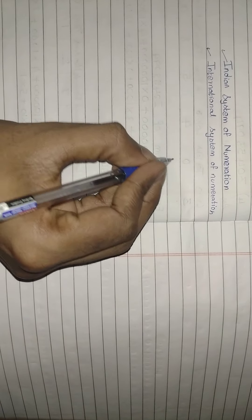No need to write this in your classwork, just look here. We are going to learn two systems of numeration: one is the Indian system of numeration, and another is the International system of numeration. We are going to learn both of these.